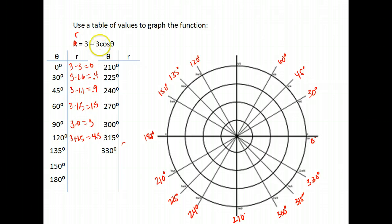150, the cosine of 150 is about negative 0.87 times negative 3 is a positive 2.6 so I have 3 plus 2.6 which is 5.6. And 180, the cosine of 180 is negative 1 times negative 3 is positive 3 so I have 3 plus 3 equals 6.